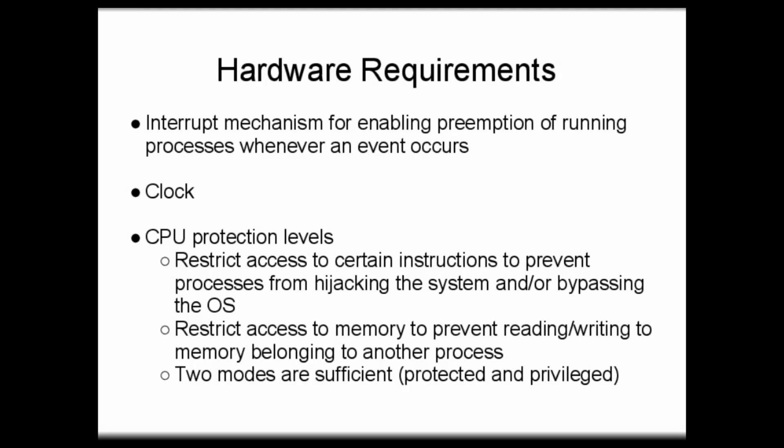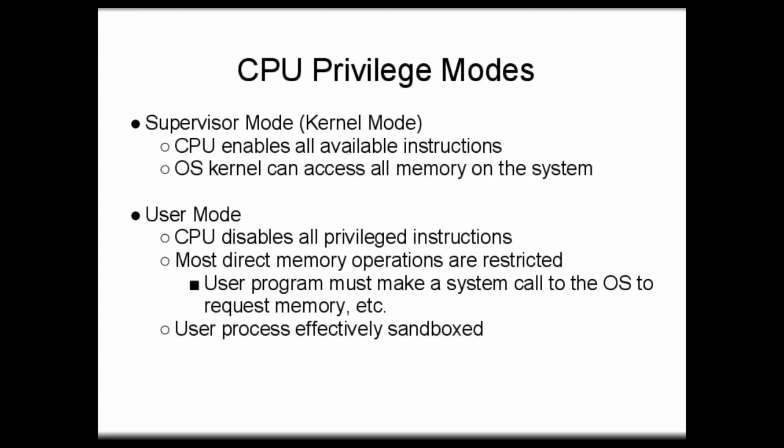Two CPU protection levels are sufficient: a protected mode and a privileged mode. These modes are also called supervisor mode or kernel mode, and user mode. In kernel mode, all instructions on the CPU are enabled and the kernel can access all memory on the system. In user mode, the CPU disables all the privileged instructions and restricts most direct memory operations. Thus, a user program must make a system call to the operating system to request memory or perform other resource allocation tasks. In this way, the user processes are effectively sandboxed both from the system and from each other.